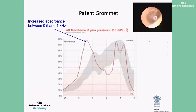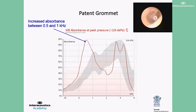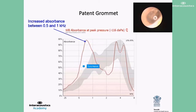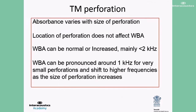Let's look at the next condition, which is a patent grommet. Wideband absorbance can be useful in the determination of the middle ear status in the presence of grommets. The typical pattern found with a grommet in situ is increased absorbance in the mid to high frequencies, especially between 0.5 to 1 kHz with a patent grommet. Another condition commonly seen in clinics is tympanic membrane perforation. In ears with tympanic membrane perforation, absorbance can be either normal or increased, mainly in frequencies below 2000 Hz.